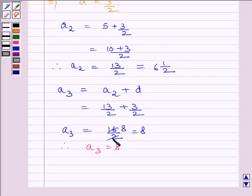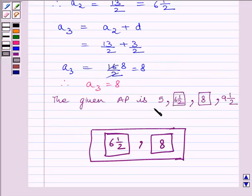The required missing terms are 6½ and 8. Therefore, the given AP is: 5, 6½, 8, 9½.